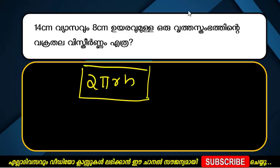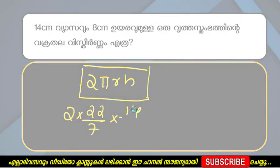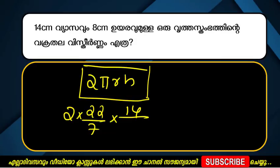We will say the value: 22/7. That's why 2. The value of π is 22/7. R is the value of R. 14 divided by 2.